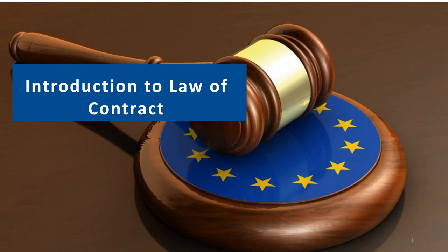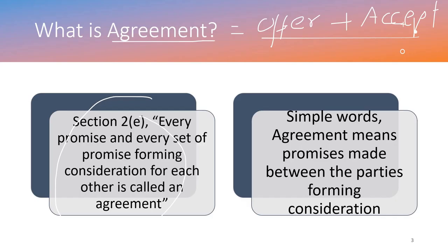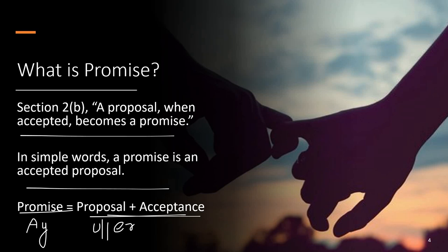Let's recap the chain. We started with: Contract = Agreement + Enforceability by Law. What is agreement? Agreement = Promise + Consideration. What is a promise? Promise = Offer + Acceptance. Enforceability means something you can take to the court of law; something allowed and enforceable by law. That is what enforceability means — it has the power of going to a court of law.